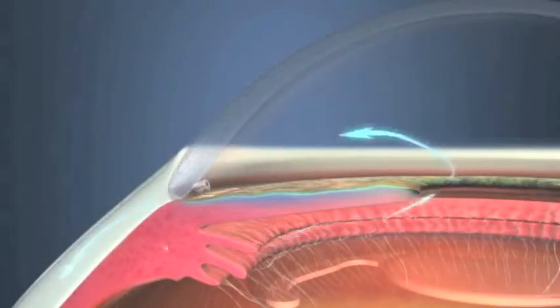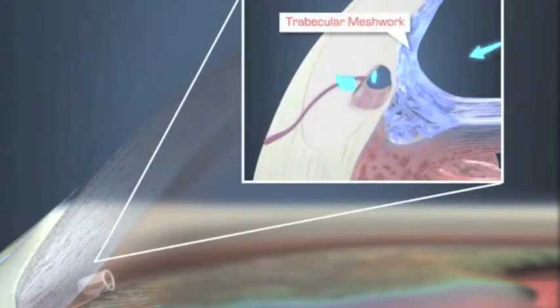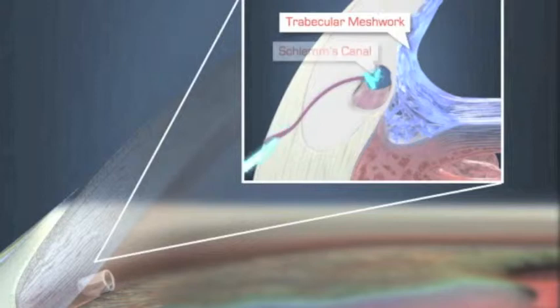The eye stent implant works by improving the flow of aqueous humor fluid through your trabecular meshwork, which is a structure through which fluid exits the eye. This fluid then drains into a structure called Schlemm's canal.